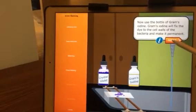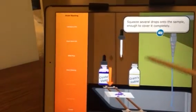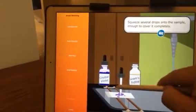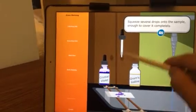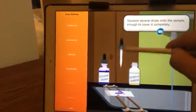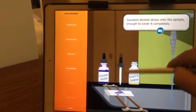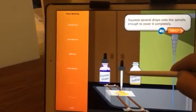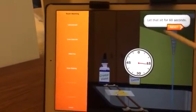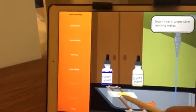Now use the bottle of Gram's iodine. Squeeze several drops onto the sample, enough to cover it completely. Let that sit for 60 seconds. Now rinse it under slow running water.